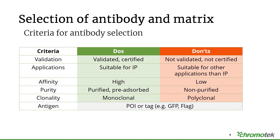The affinity of the antibody should be rather high. The higher the affinity, the more effectively it can pull down your protein of interest — nanomolar to low nanomolar affinity would be ideal. The antibody should be purified and ideally pre-absorbed against the antigen. It can be monoclonal, but polyclonal antibodies also work and may even be beneficial in some cases — for example, for chromatin IPs, polyclonal antibodies are recommended.